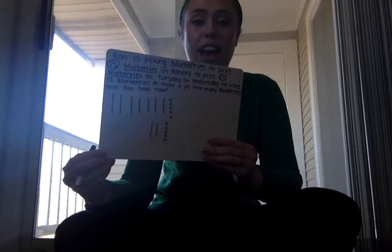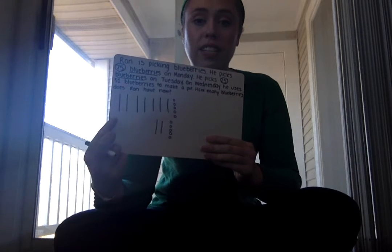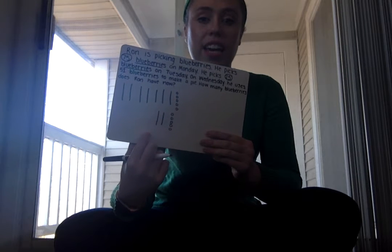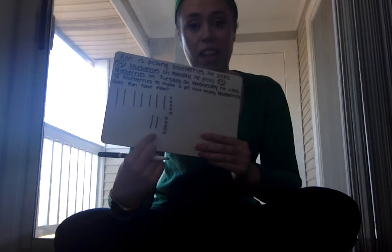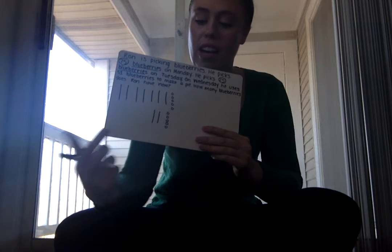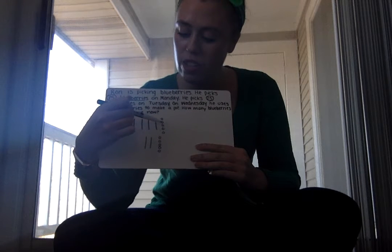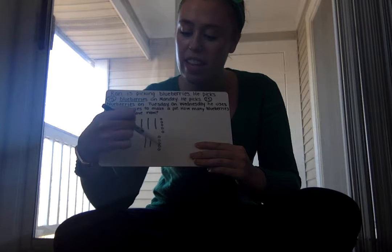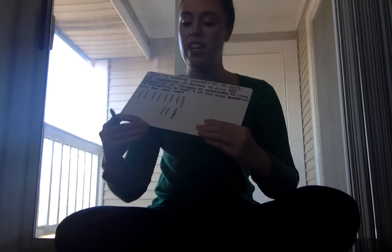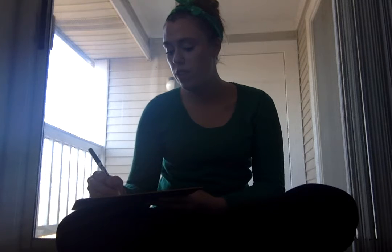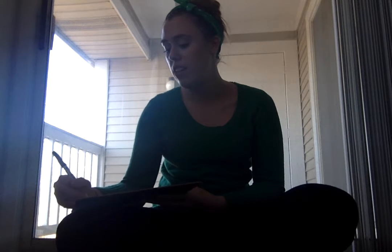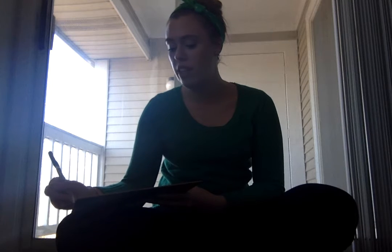I'll count up what I have starting with my tens: 10, 20, 30, 40, 50, 60, 70, 80, 90. Now I add in my ones, continuing from 90: 91, 92, 93, 94, 95, 96, 97, 98, 99, 100. So right now he is at 100 blueberries. I'll write that down so I remember — he has 100 blueberries.